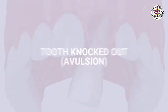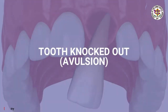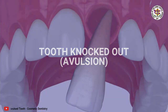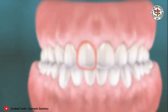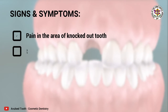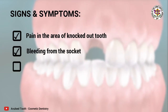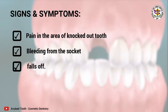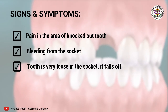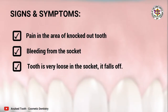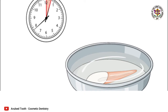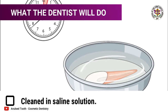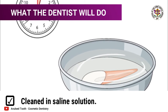Tooth knocked out (avulsion): a tooth may be accidentally thrown out of its socket, caused by a sudden blow to the teeth. Signs and symptoms include pain in the area of the knocked-out tooth, bleeding from the socket, and the tooth being very loose and falling off.